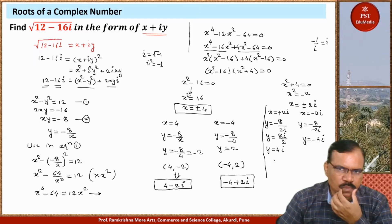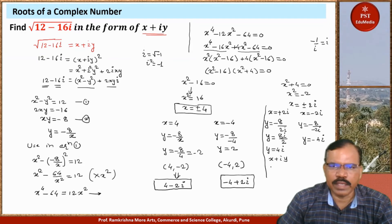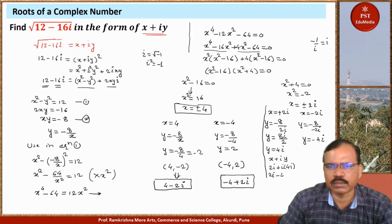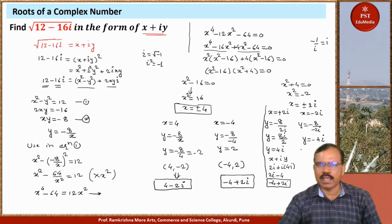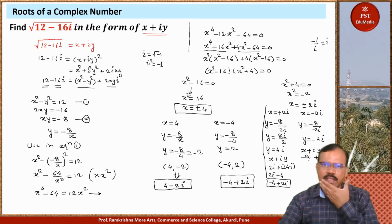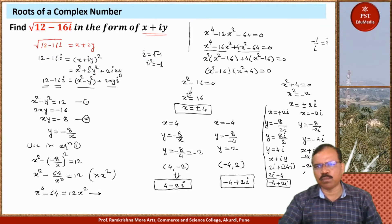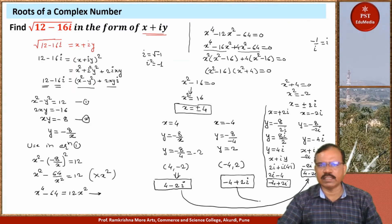So for x equals 2i, y equals 4i, giving x plus iy equals 2i plus i(4i) equals 2i minus 4, which is minus 4 plus 2i. For x equals minus 2i, y equals minus 4i, giving x plus iy equals minus 2i plus i(minus 4i) equals minus 2i plus 4, which is 4 minus 2i. These are identical to the earlier two roots.